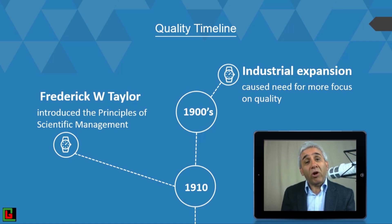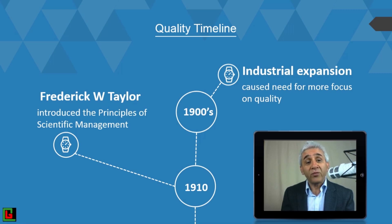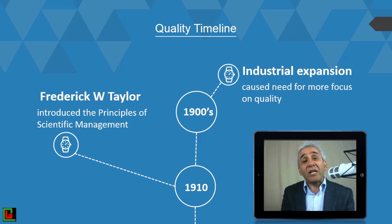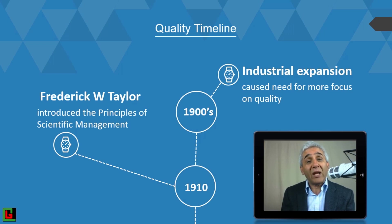The 20th century started with industrialization — that is when quality changed from craftsmanship to an industrial model. This model required more emphasis on quality because the work was now being done by a number of people together, producing a product or service. In 1910, Frederick W. Taylor introduced the concept of scientific management, when time and motion studies and similar concepts were developed.